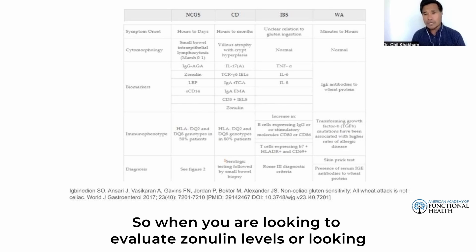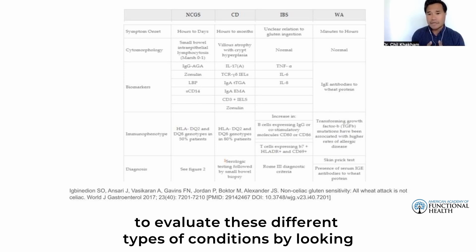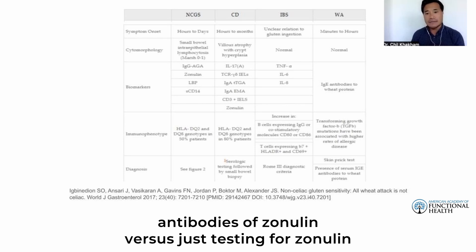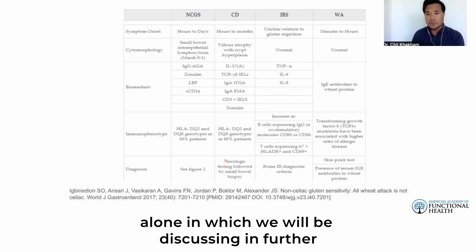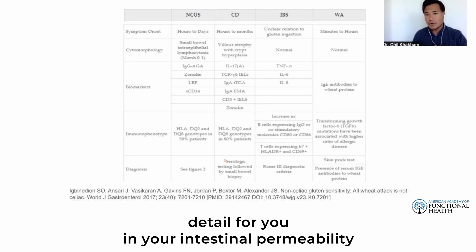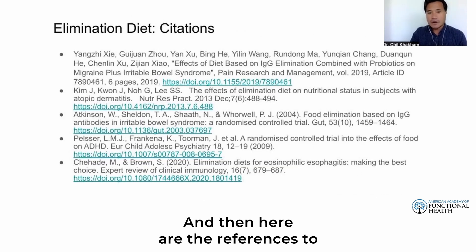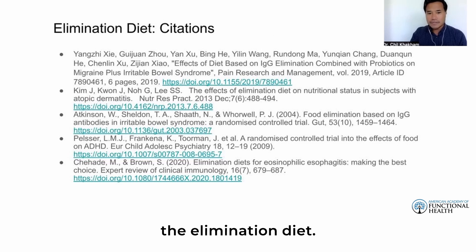When looking to evaluate zonulin levels or evaluating these different conditions using zonulin markers, you want to look for the antibodies of zonulin rather than testing for zonulin alone — this will be discussed in further detail in the intestinal permeability and testing trainings. And those are the references for the elimination diet. Thank you.